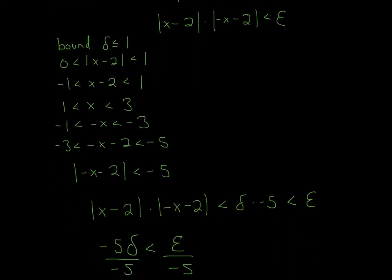So what you can do now is bound it to the largest number. You take the absolute value of both ends and see which one is the largest — meaning, if you make both positive, which is the largest? That would be 5. So |negative x minus 2| is less than 5. Once you have that, you can complete it. Over here, you have |x minus 2| times |negative x minus 2|.